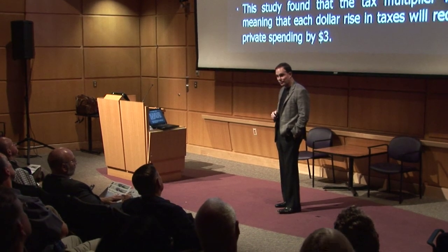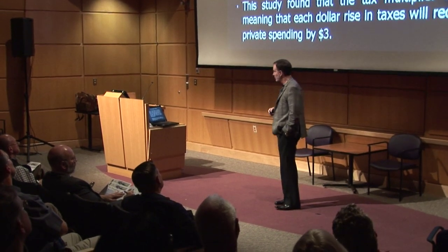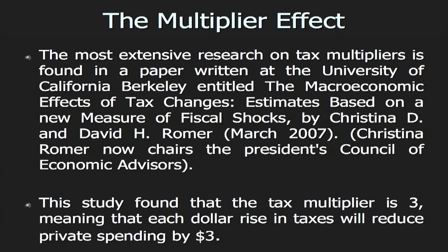Another couple of thoughts — it's the multiplier effect. The most extensive research on tax multipliers is from Christina Romer and her husband. It says that tax multipliers are a factor of three. If you increase taxes by 1% of GDP, you're going to get a 3% loss of GDP over about three or four years. It's a reduction.